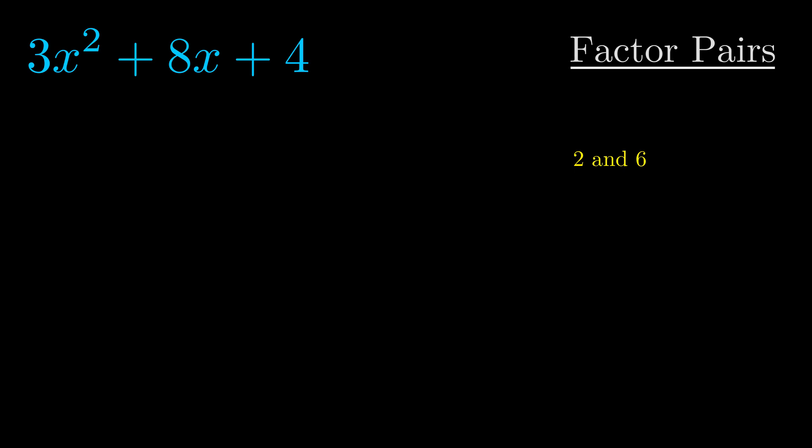Once we have this factor pair, what we want to do is use it to split up the b value.